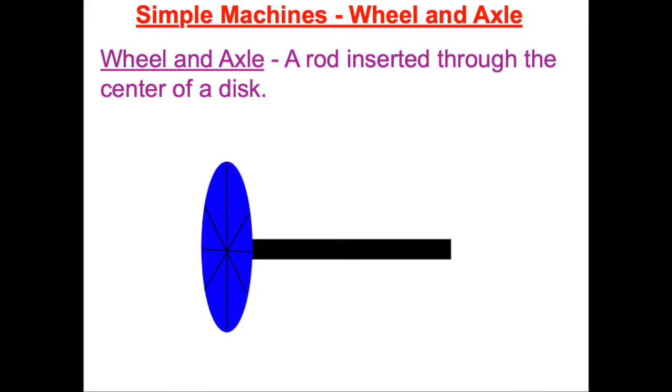A wheel and axle is a simple machine. It is made by taking a rod, called the axle, and inserting it through the center of a disc, called the wheel.